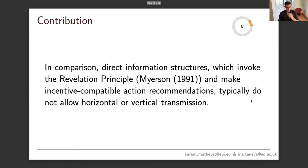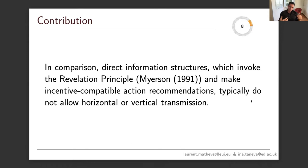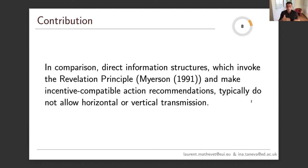A word of clarification: direct information structures, which we are all familiar with, invoke the revelation principle and make incentive-compatible recommendations. They typically do not allow horizontal or vertical transmission. In many problems, optimization over direct information structures leads to action recommendations which are private information to each agent, which others are uncertain about. This implies that there is hardly any other way but to deliver these action recommendations to each agent in private. If the general director wants to maximize total effort using a direct information structure, she would have to speak to every single employee in private individually, which in a large organization is just not realistic.